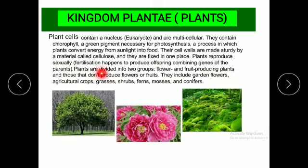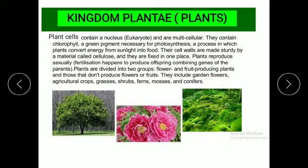Plants are divided into two groups: flower and fruit producing plants, and those that do not produce flowers or fruits. They include garden flowers, agricultural crops, grasses, shrubs, ferns, mosses, and conifers.